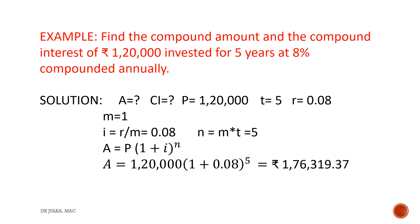In this example, we want to calculate the amount and compound interest. We know that amount equals principal multiplied by 1 plus I raised to the power N. In this question, principal is 1,20,000, I is 0.08, and N is 5. By inserting all these values into the formula, we will get an amount of rupees 1,76,319.37.